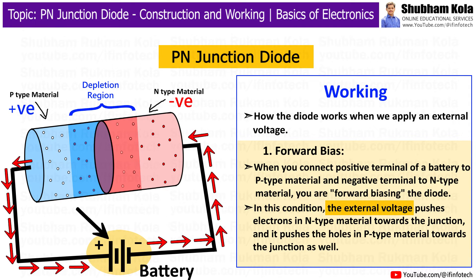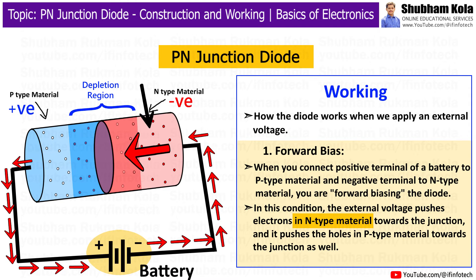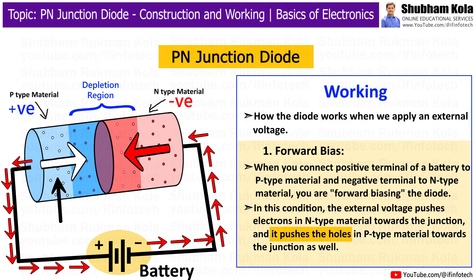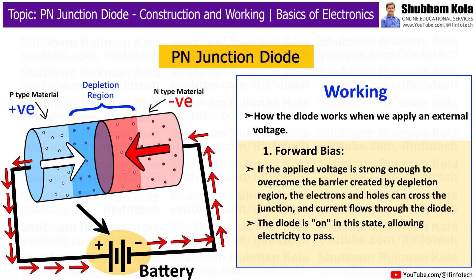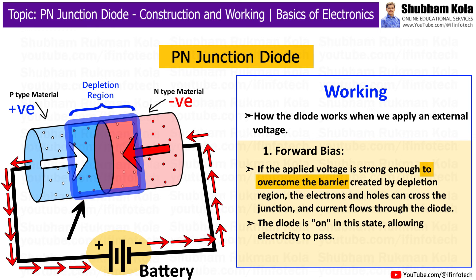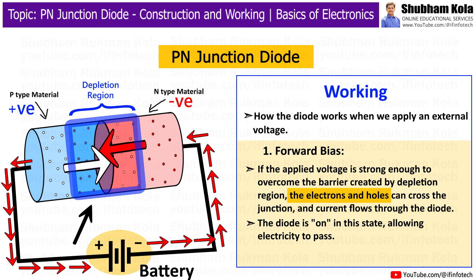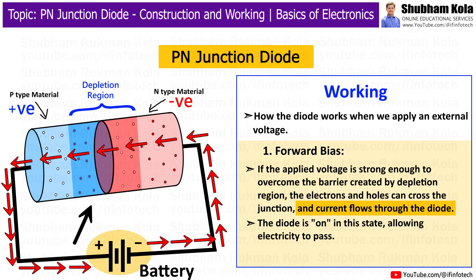In this condition, the external voltage pushes electrons in the N-Type Material towards the junction, and also pushes holes in the P-Type Material towards the junction. If the applied voltage is strong enough to overcome the barrier created by the depletion region, the electrons and holes can cross the junction and current flows through the diode. The diode is ON in this state, allowing electricity to pass.